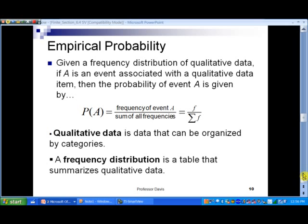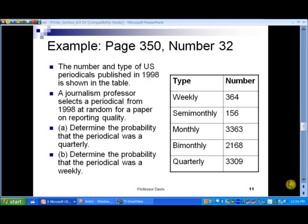We'll talk about this more in the next chapter. Qualitative data is data that can be organized into groups, organized into categories called classes. And a frequency distribution is simply a summary table of that type of data. So we take the frequency of one of the groups divided by the sum of all the frequencies. So that's our empirical probability.